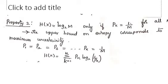The second property is that the upper bound on entropy corresponds to maximum uncertainty. H(X) = log M to the base 2, only if pK = 1/M for all k. That is, if we have M symbols (k = 0 to M−1) and all symbols have the same probability, then the value of H(X) equals log M to the base 2.